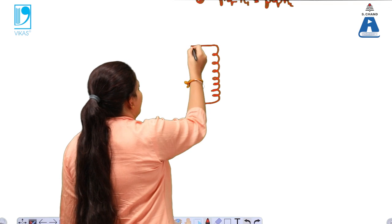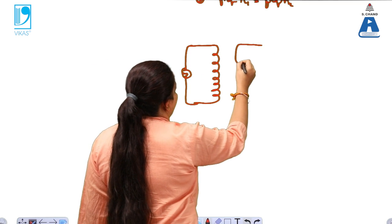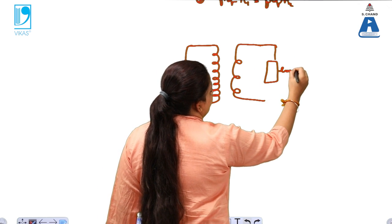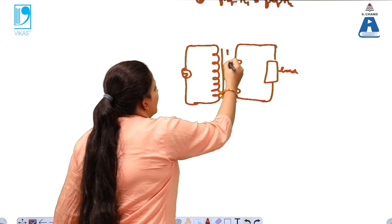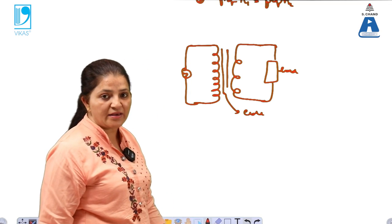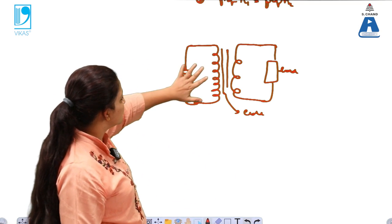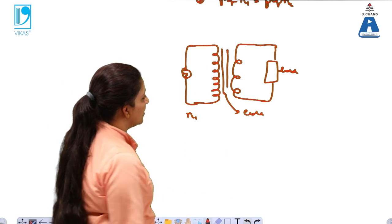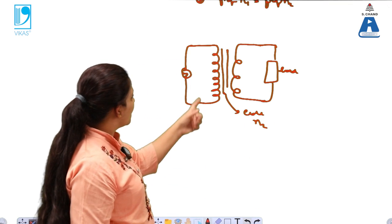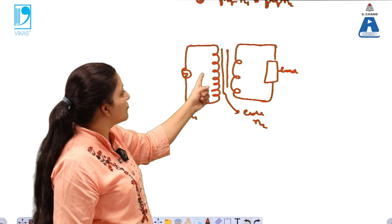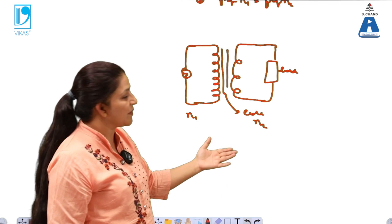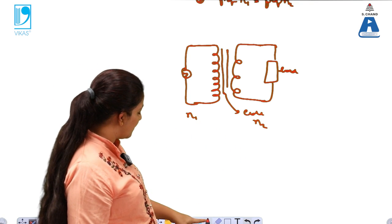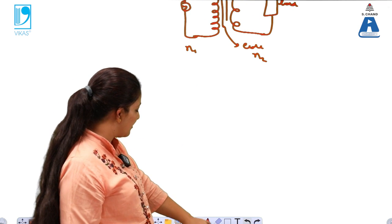Now let's draw the basic diagram of a transformer. This is the primary part and this is the secondary part, with the core in between. This is the basic diagram of the transformer. The primary part has number of turns N1 and the secondary part has number of turns N2. In the primary part the number of turns is more, while in the secondary part the number of turns is smaller.